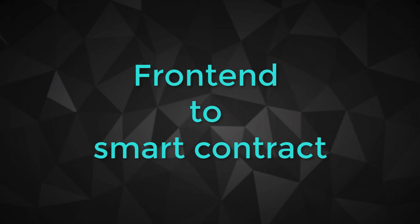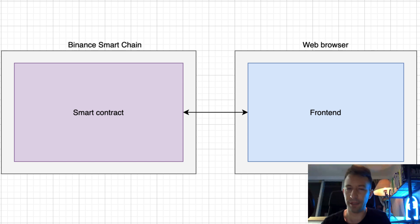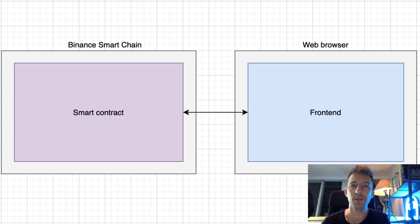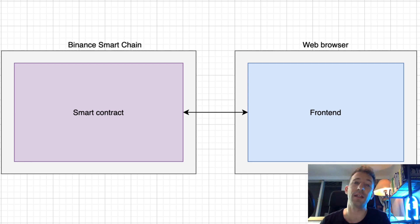I'm Julian and on Eat the Blocks, I teach blockchain development. In your blockchain application, also called a decentralized application or DApp, we have two main parts: the smart contract, which runs on the Binance Smart Chain, and the front-end, which runs in the web browser of the user.